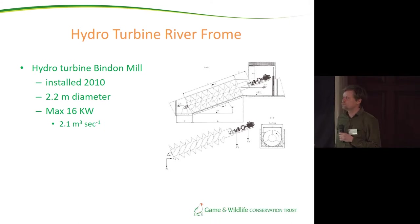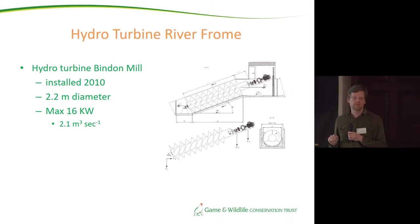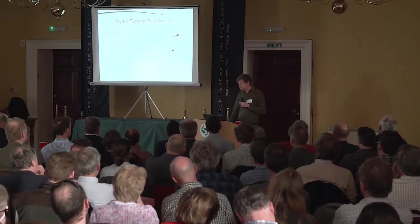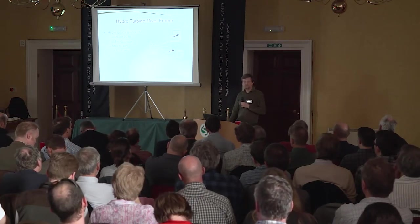To put that into perspective, if it were producing at maximum capacity throughout the year, that would be the equivalent electricity consumption of about 30 to 40 houses in the UK. But even in a relatively stable flow regime like a chalk stream, it's not running at max capacity all the time. At times there's not enough water for it to run at all, and at times actually too much water. So it probably provides energy for around 10 to 20 houses.